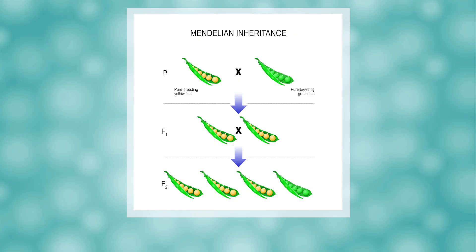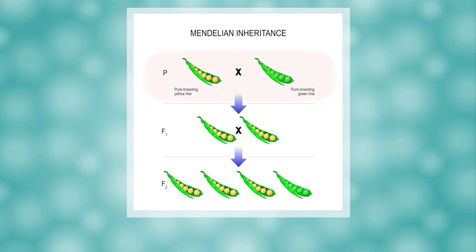Through Mendel's experiments with pea plants, we saw examples of a purebred parent generation being crossed to produce a first generation with only the dominant trait. When the first generation reproduced, the second generation was three-fourths dominant, but one-fourth recessive.